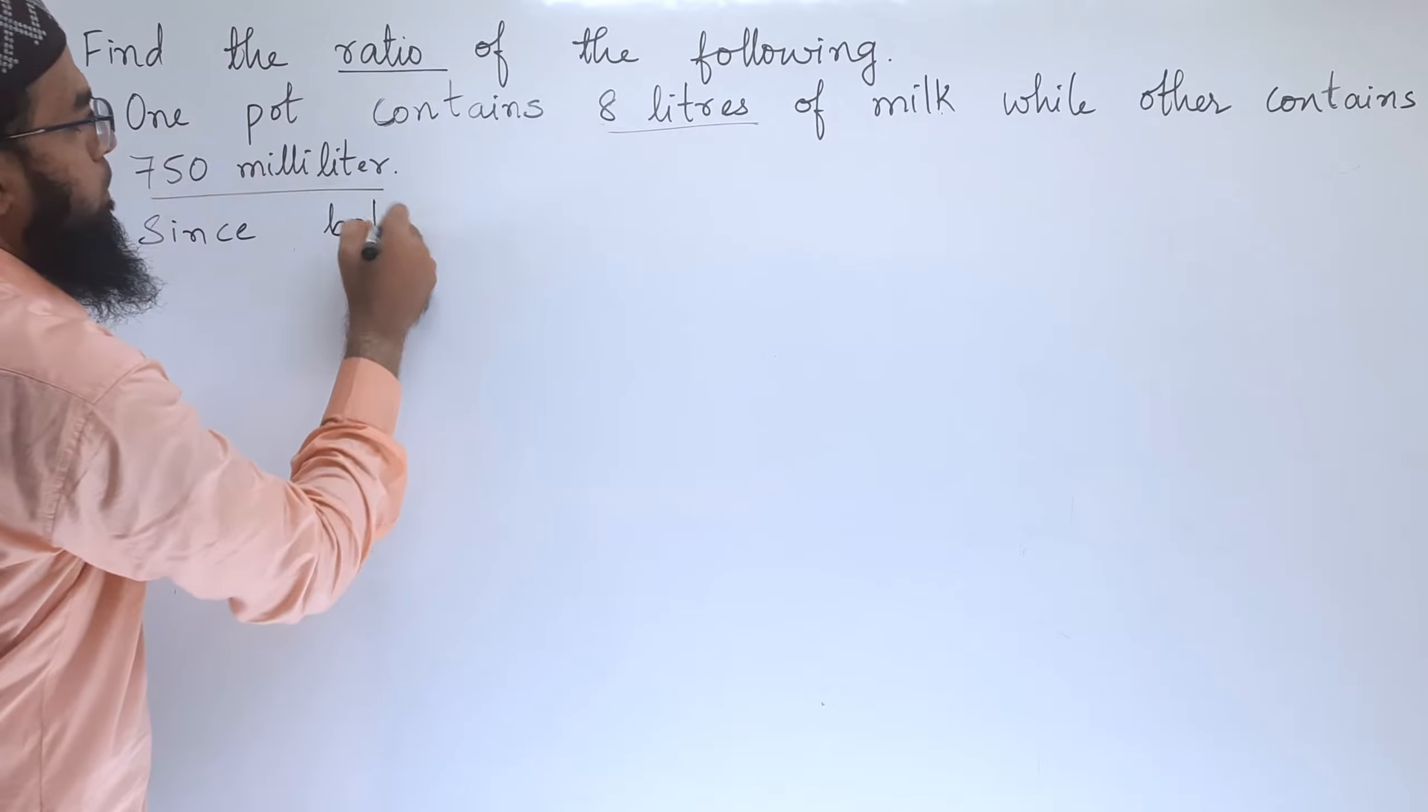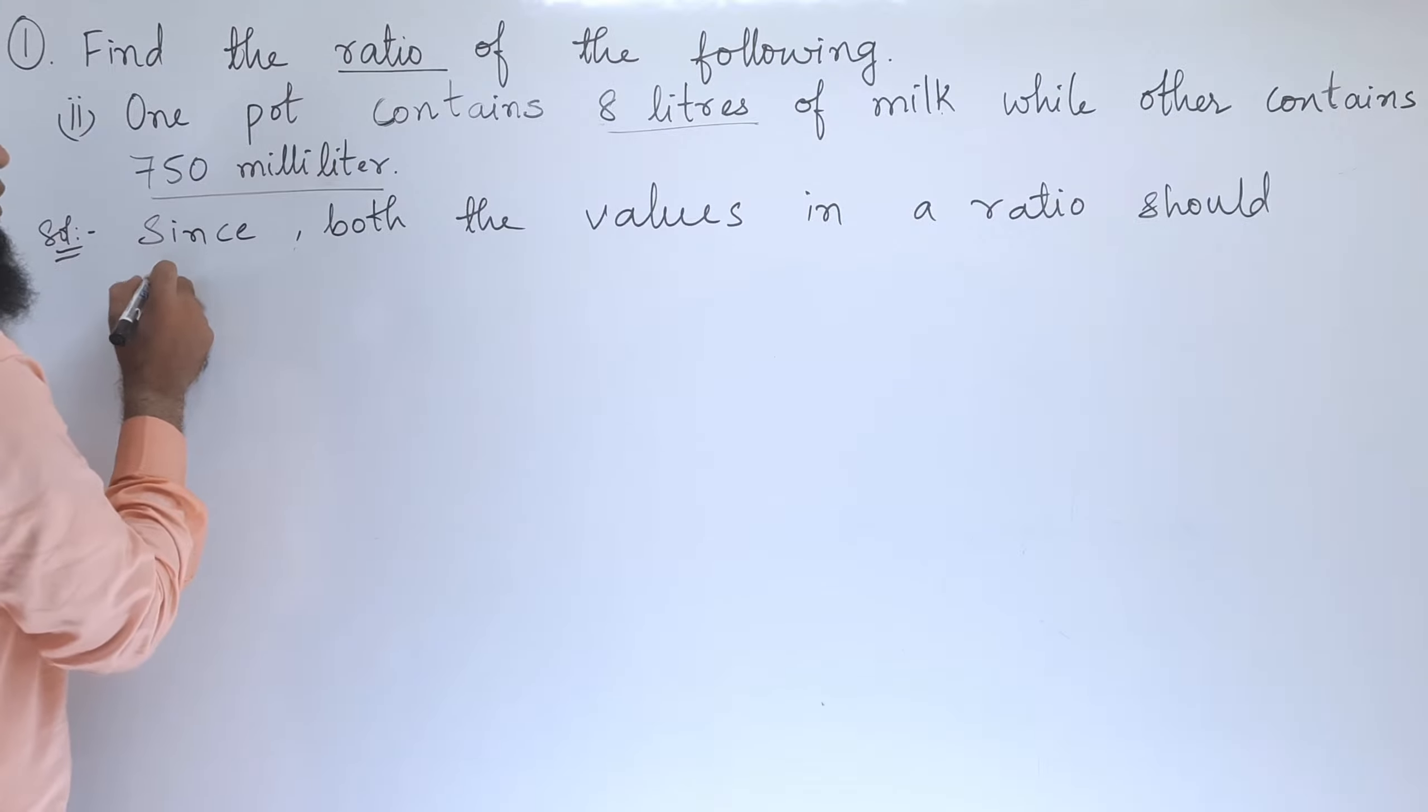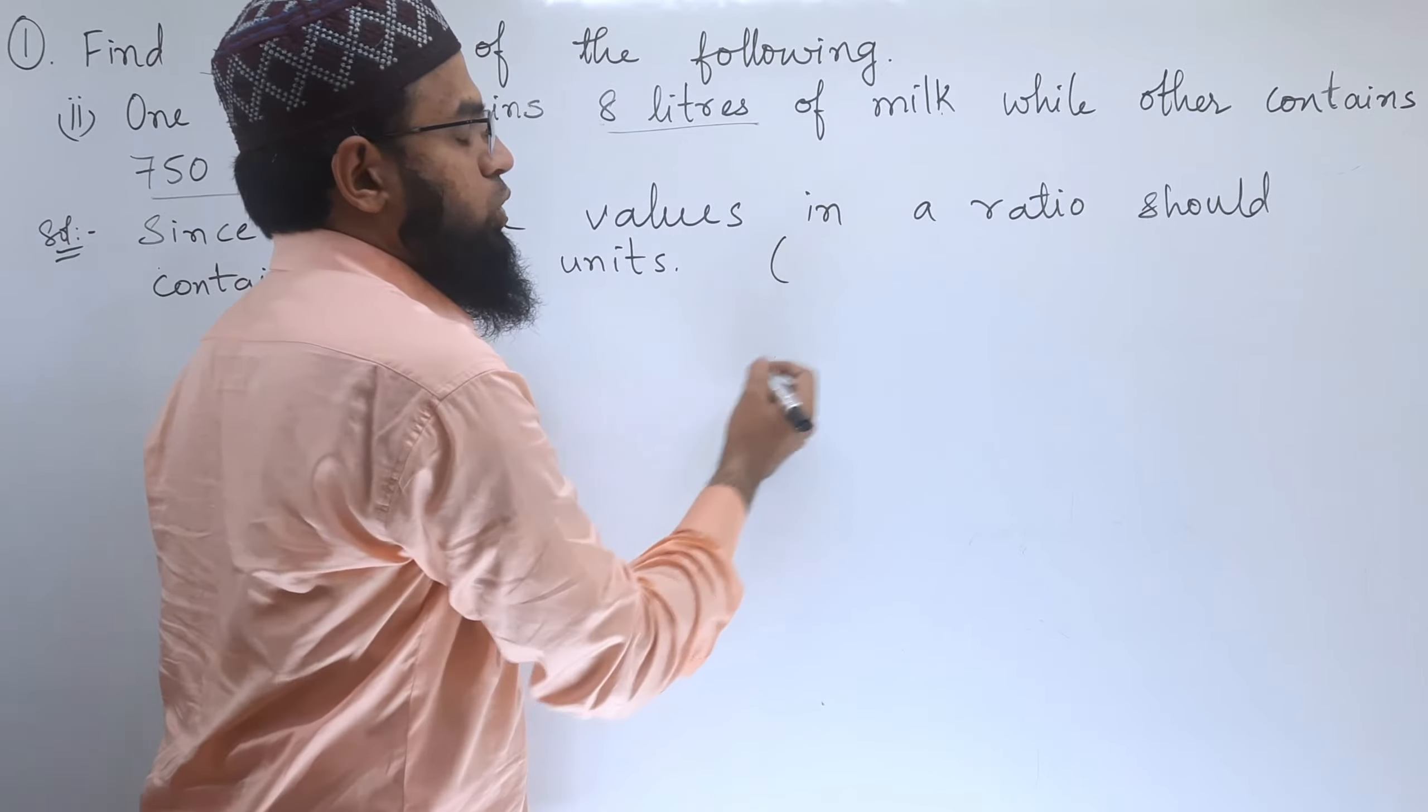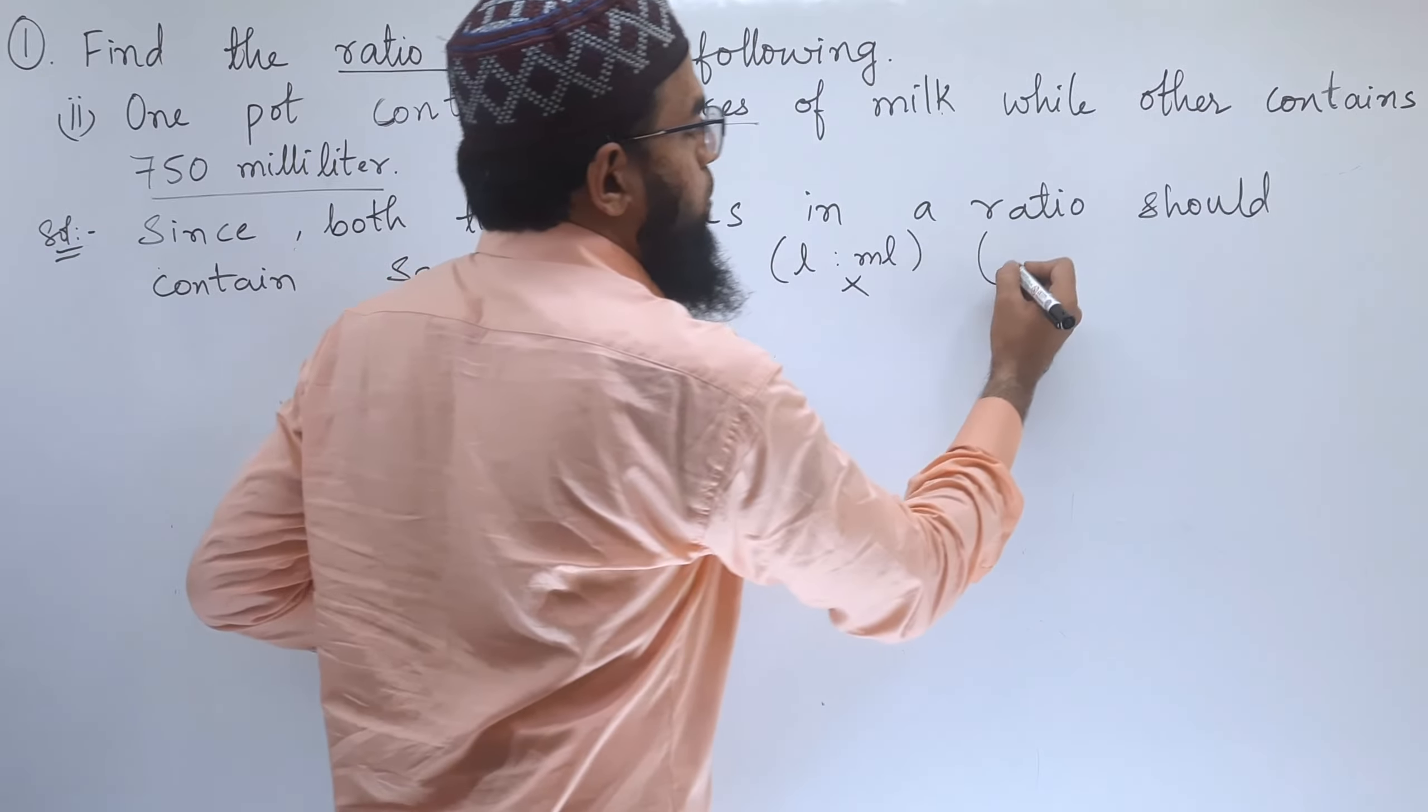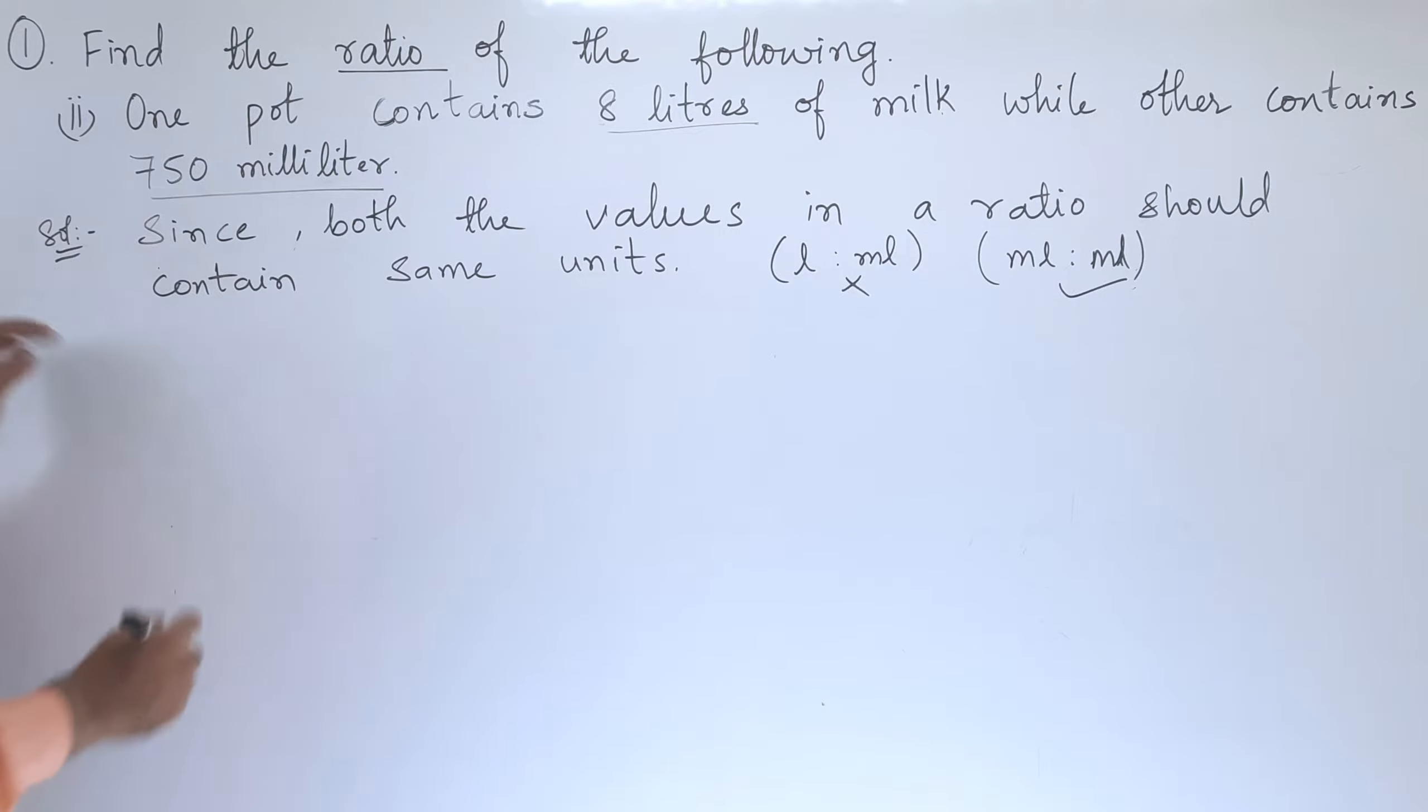Since both the values in a ratio should contain same units. So the units can be liter is to ml, milliliter. If it is in this form, it will be wrong. So it should be in ml is to ml or otherwise liter is to liter. So if you're able to convert that into same units, then it is alright.